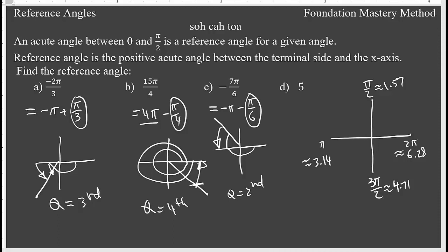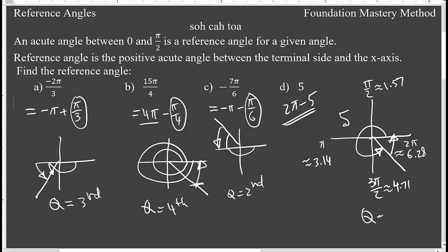Now let us look at the last part — we have 5 radians. Looking at the reference values: 6.28 and 4.71, so 5 will be somewhere in between, in the fourth quadrant. The reference angle is this portion, and how you get that is 2π minus 5. So that is my reference angle, found in the fourth quadrant.